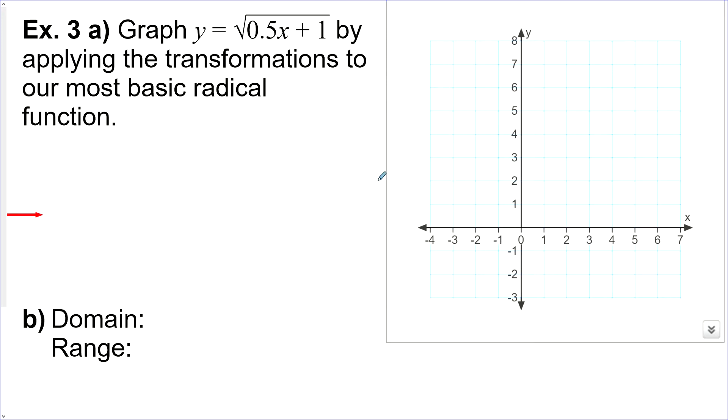Graph y equals the square root of 0.5x plus 1 by applying transformations to our most basic radical function. So, we're going to compare this to y equals the square root of x. And what transformations occurred to turn it into this function here? So, this is not in our convenient transformation form. We can't see the transformations. And that's because this 0.5 is not factored out.